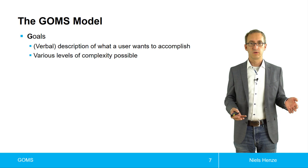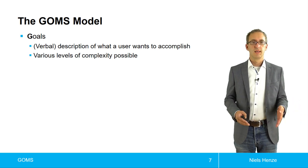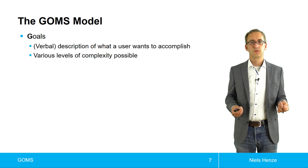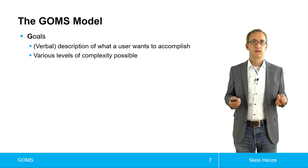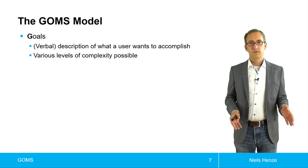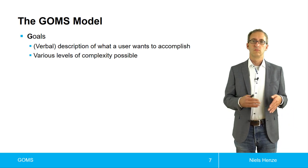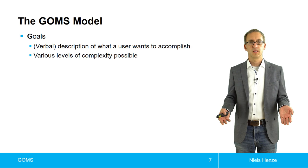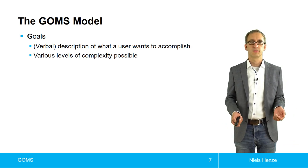And the first one are the goals. These are verbal descriptions of what a user wants to accomplish. Things like, I want to get cash. But there are different levels of complexity. So I want to get cash in general, or I want to get cash through a cash machine would be examples.